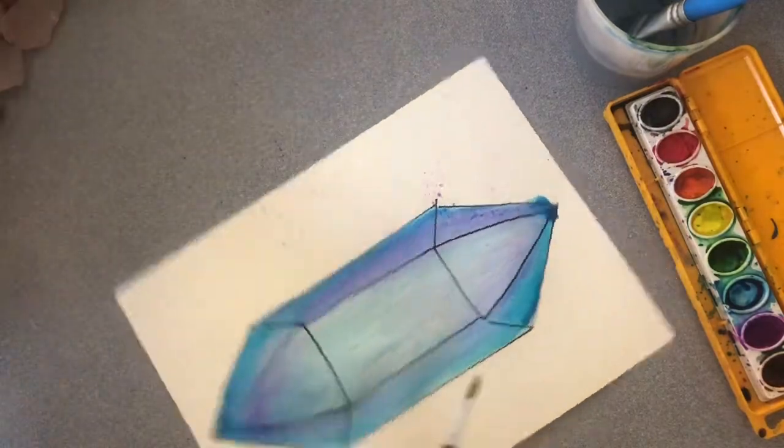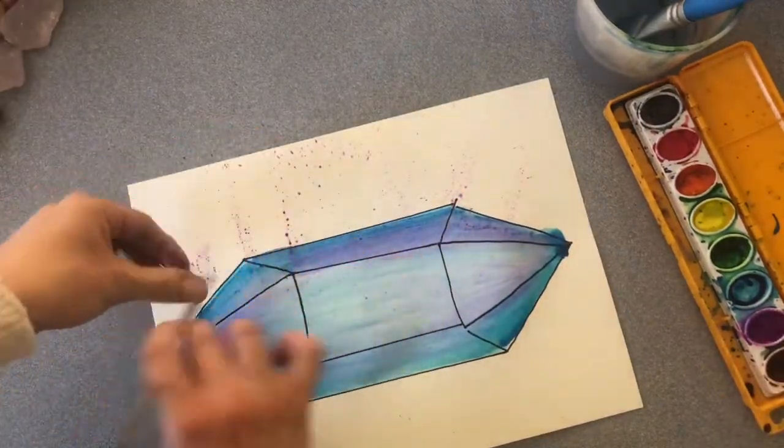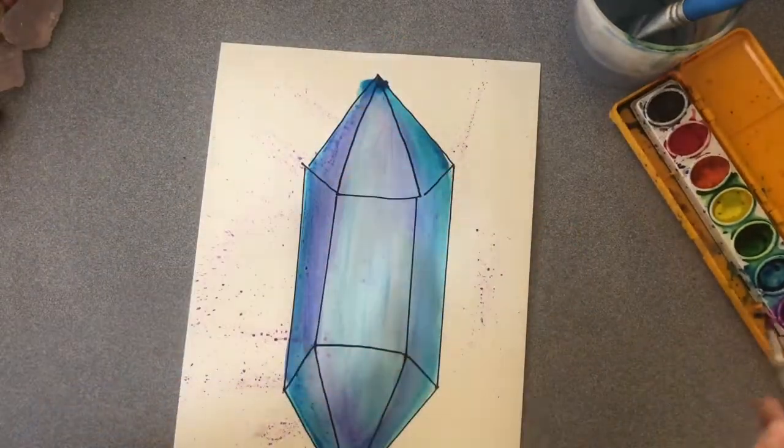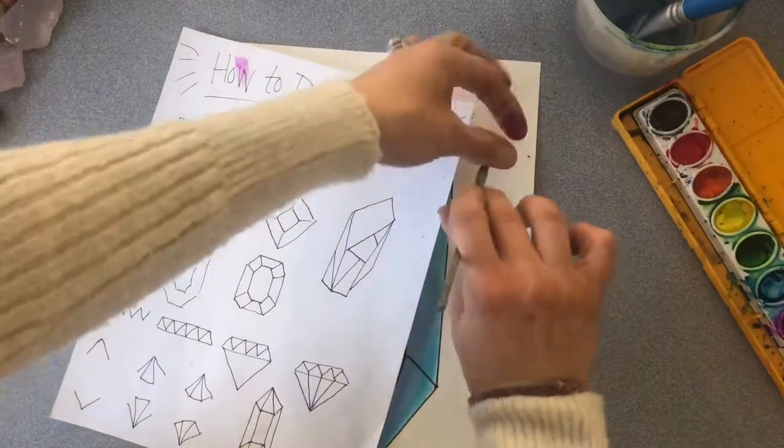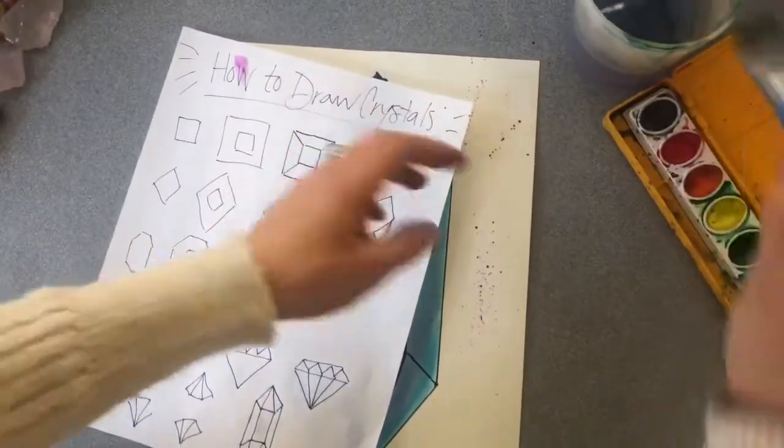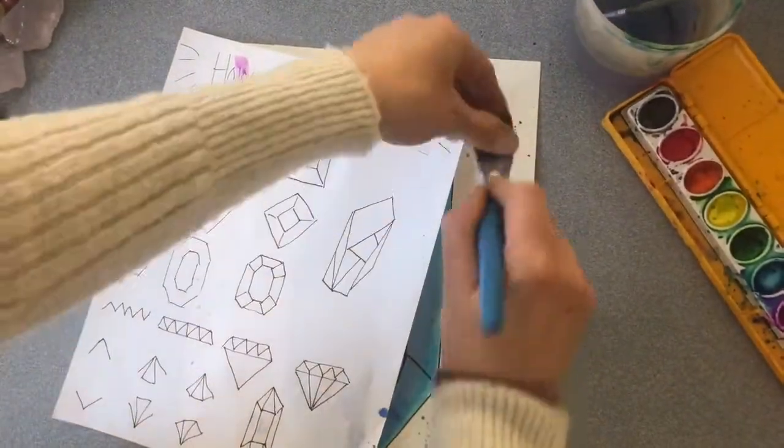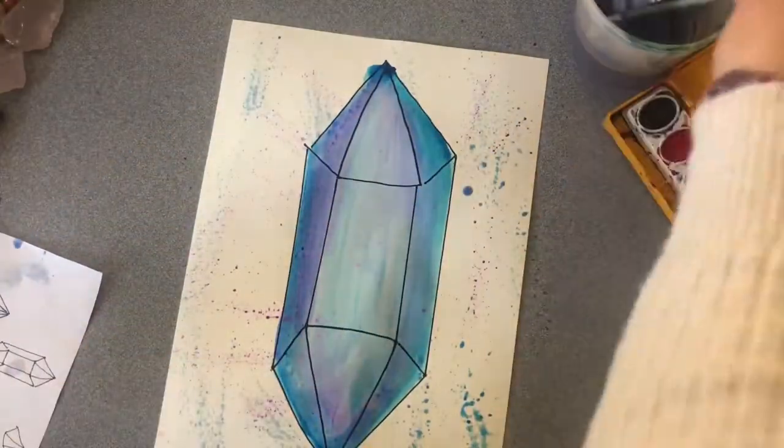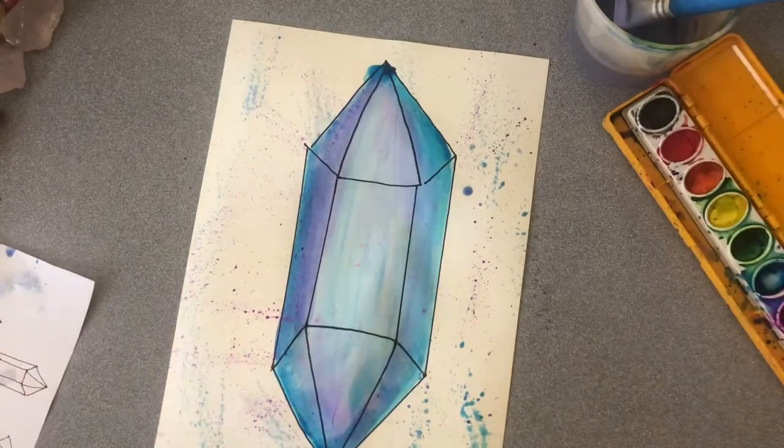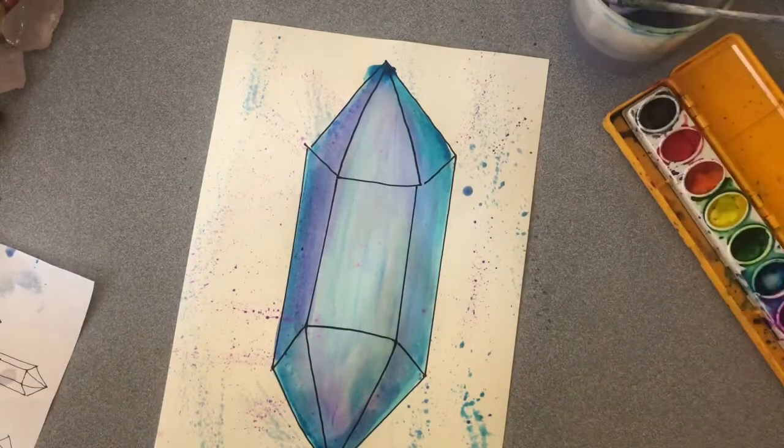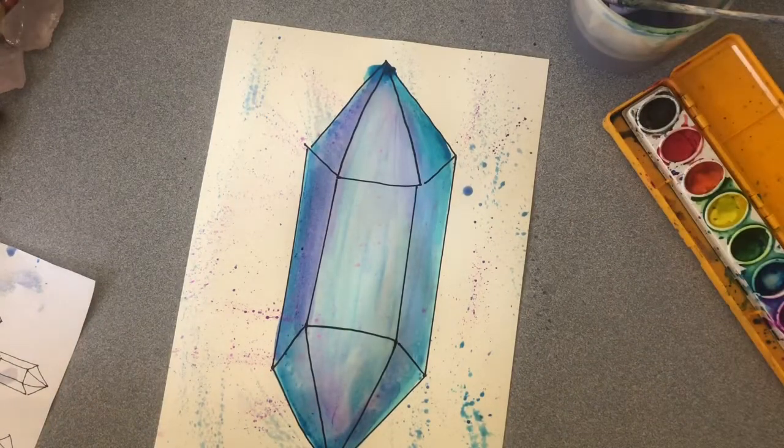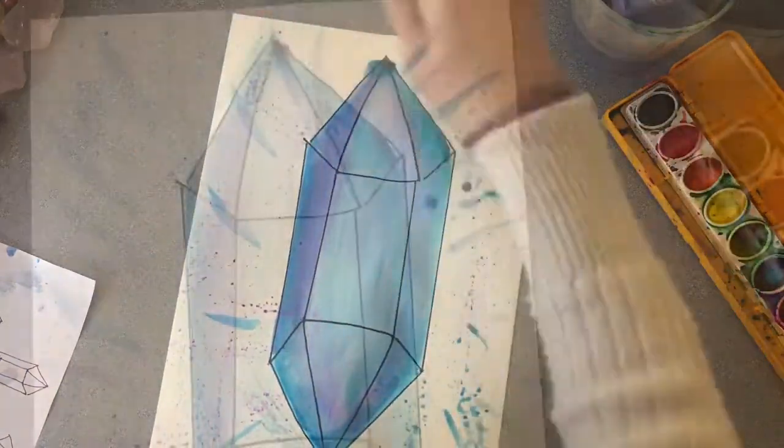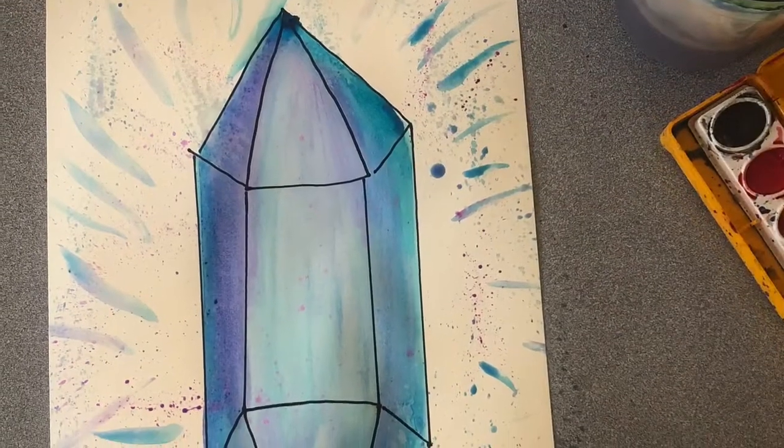When I'm all done and I really like how it looks, I'm going to take my paint brush and splatter all around it and create some fun textures around my 3D crystal. What I just did a second ago was I covered my crystal with scrap paper so that I didn't get too much splatter on my crystal, so that's something you can do. You can also add some shining lines so it looks like your crystal is shining.